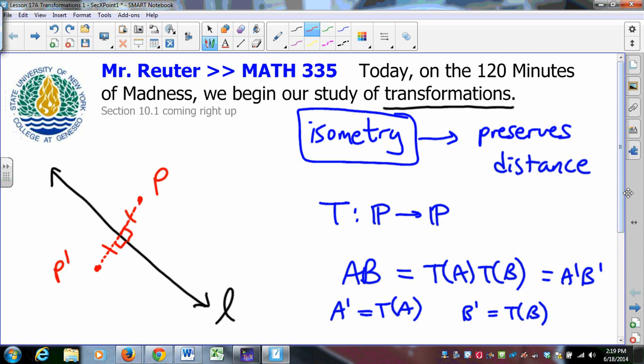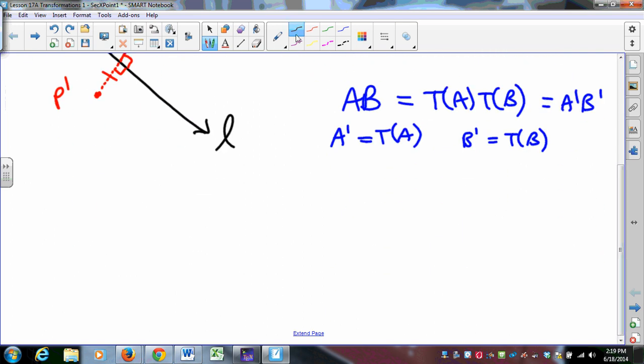By the way, not everything is an isometry. You are familiar from your high school work, take some center O and some point P, and you do a dilation using O as the center with some constant of proportionality K.